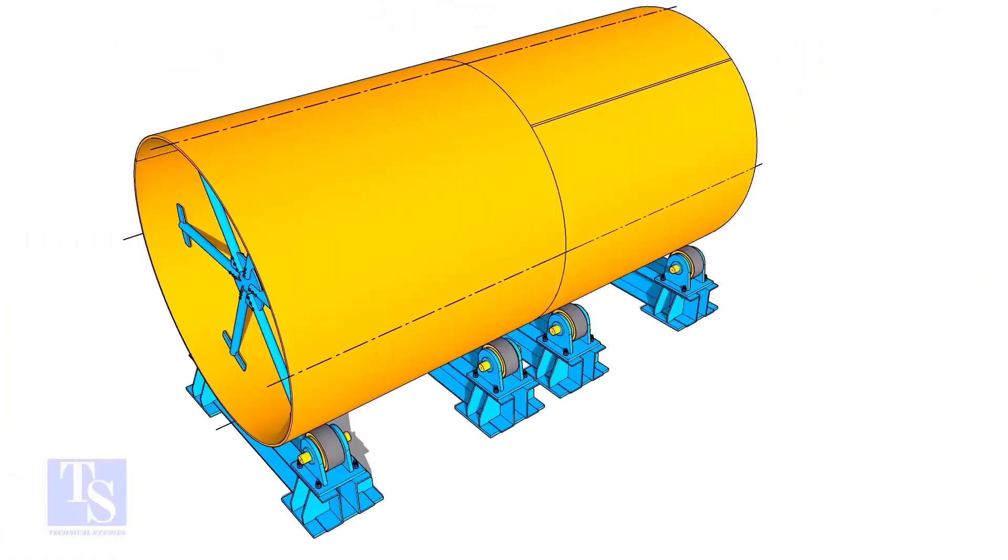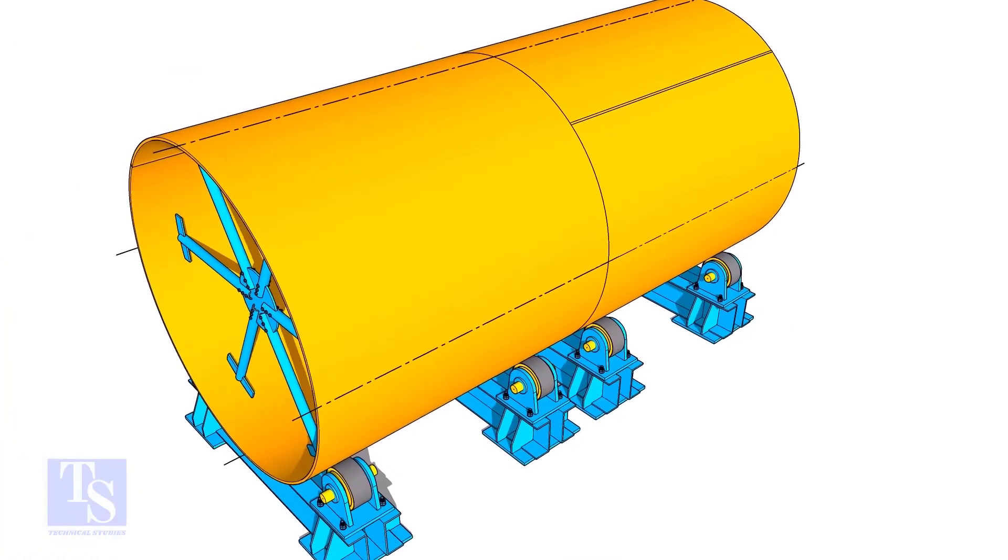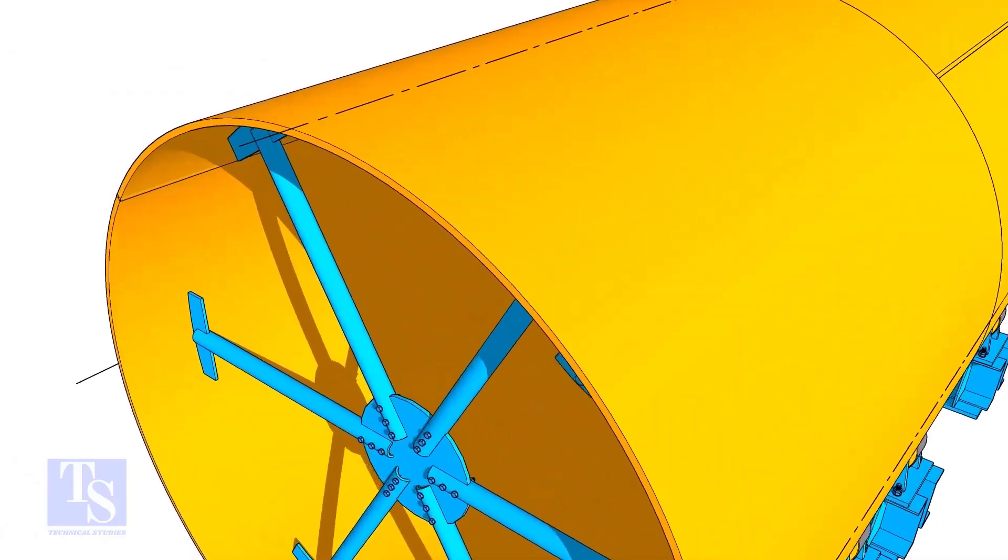Once the welding of the individual shells is complete, double the shells. Make sure the long seams of the shells are not in a line or too close.